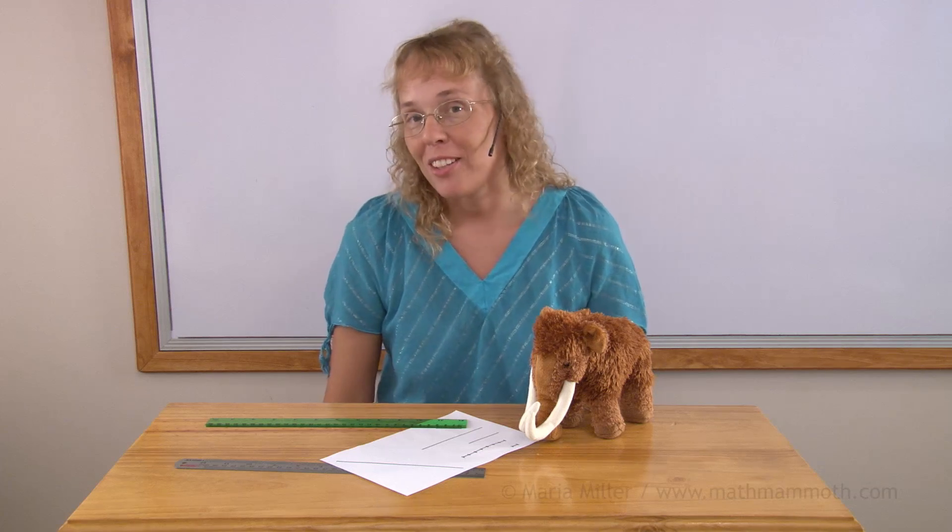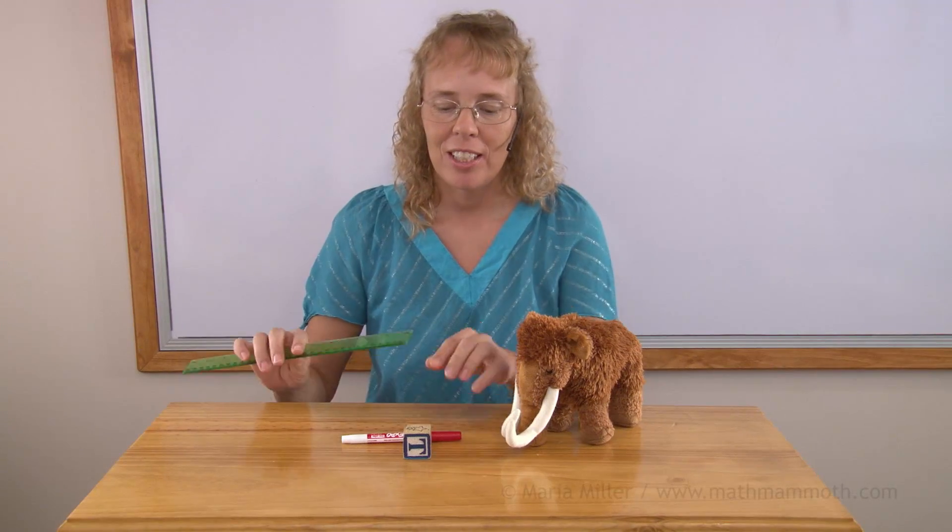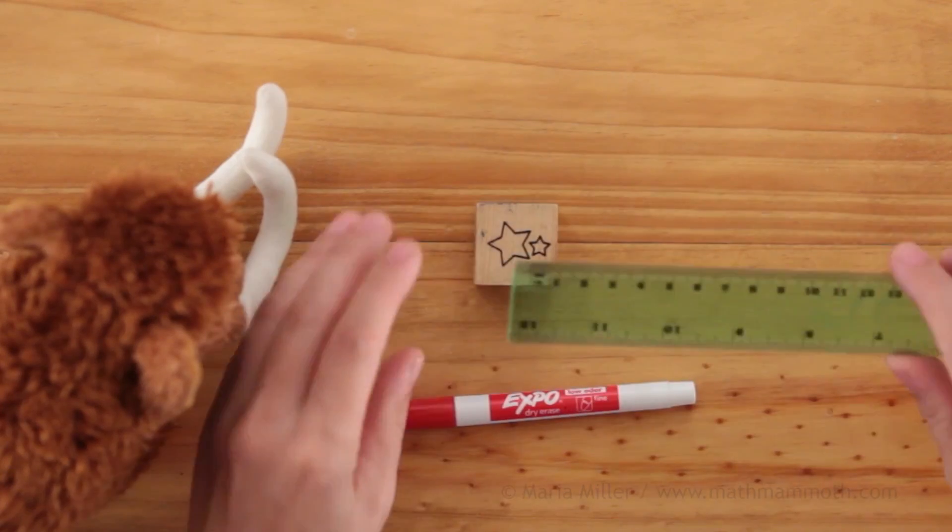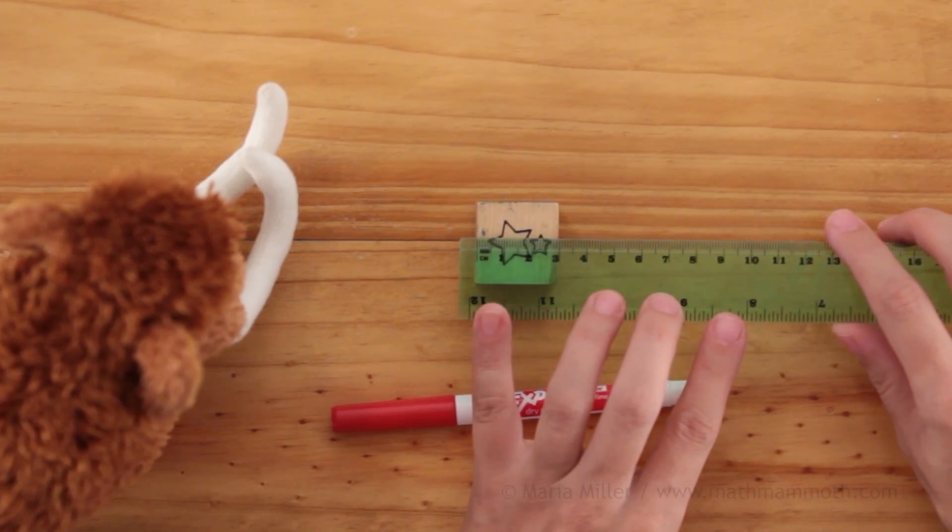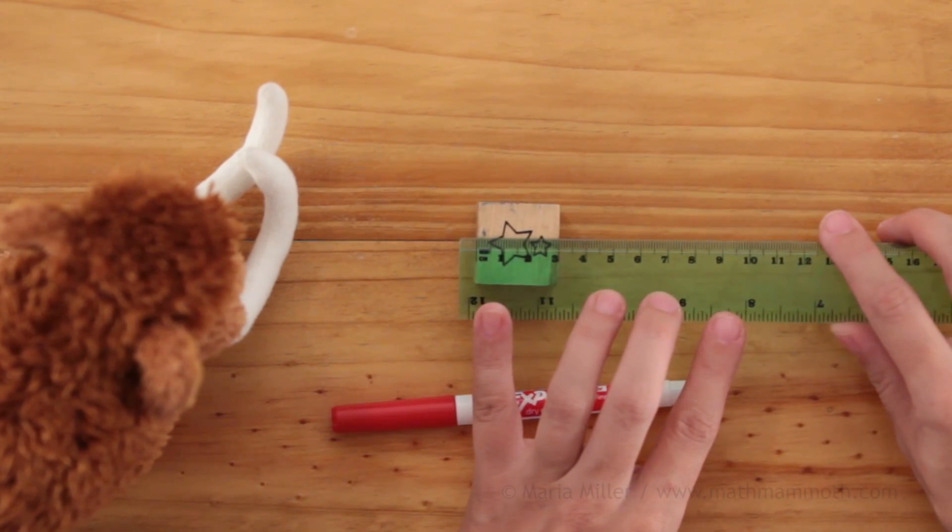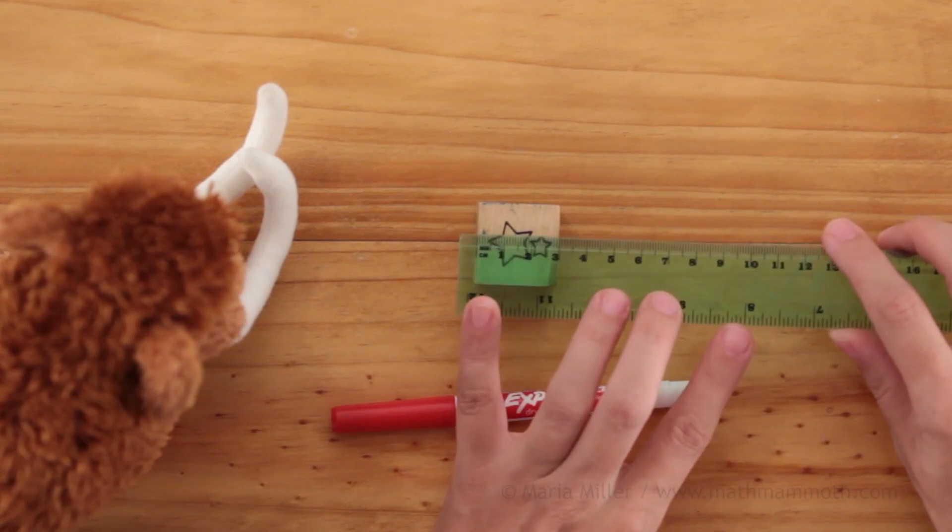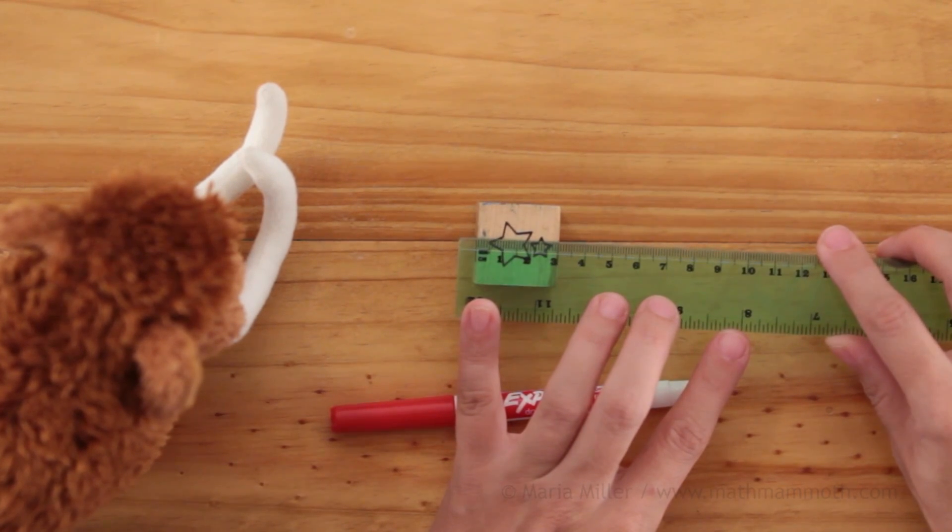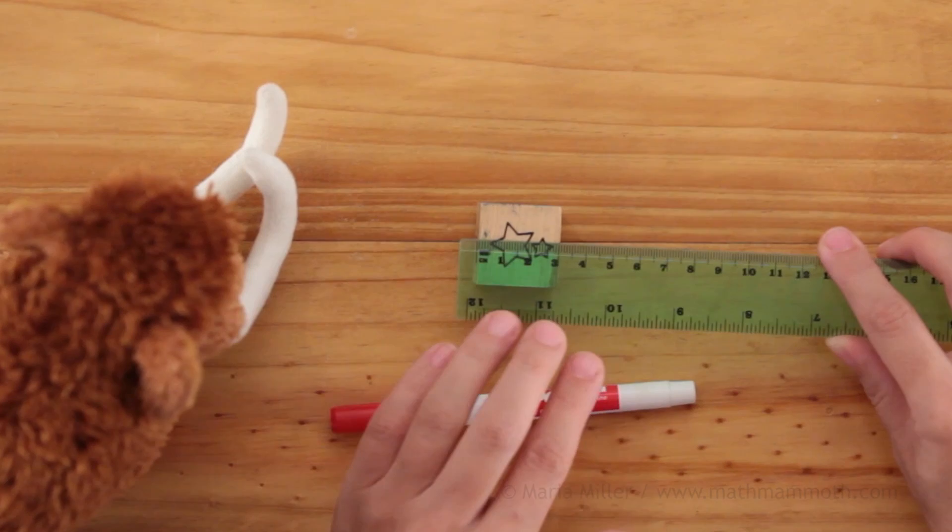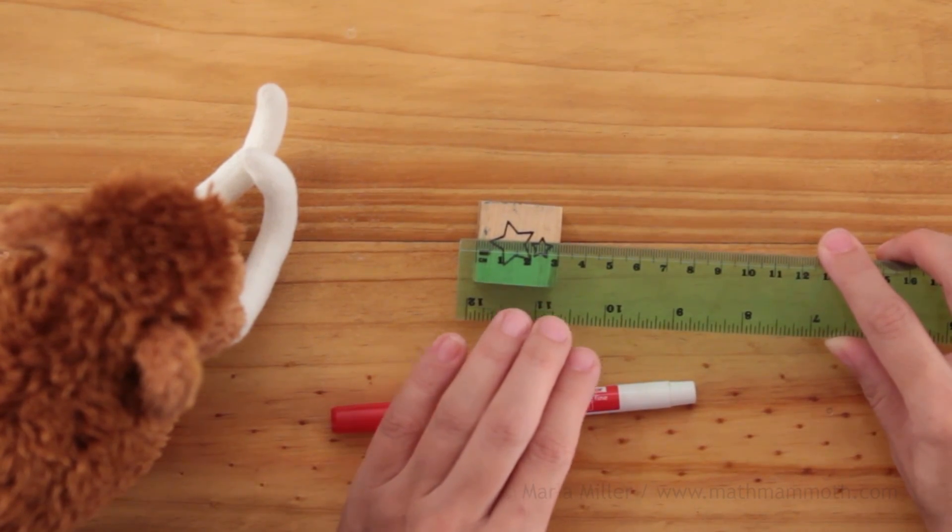Now let's measure some other things. I have here a baby block. And I'll put my ruler here on top. And notice how I need to line up the zero point of my ruler with the edge of the block. And then we see at the other edge, this is three centimeters long. Or wide.